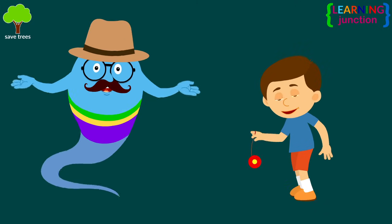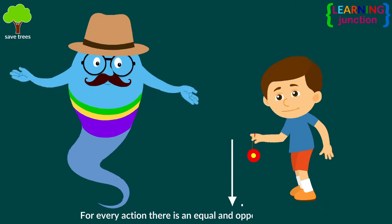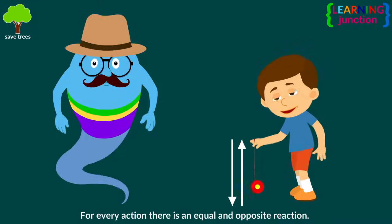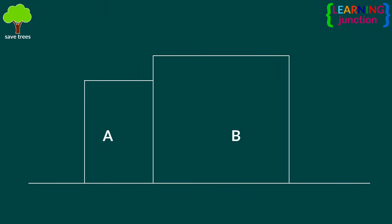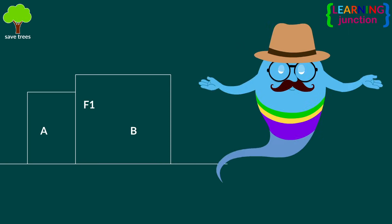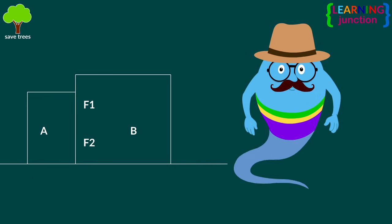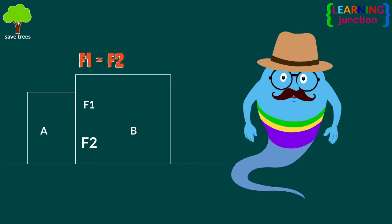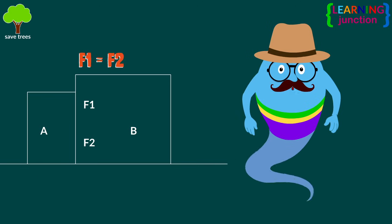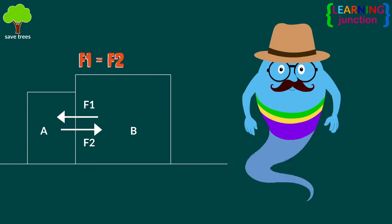Newton's third law of motion states that for every action there's an equal and opposite reaction. It means that if a body A exerts a force F1 on a body B, and body B exerts a force F2 on body A, then F1 equals F2. That is, they're equal in magnitude but opposite in direction.